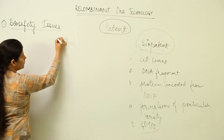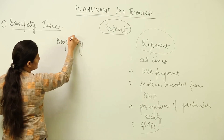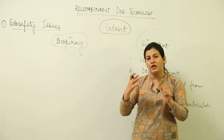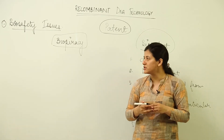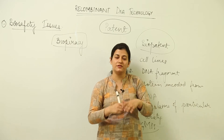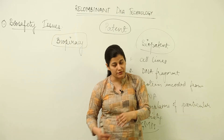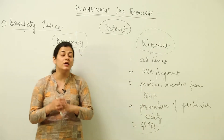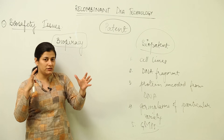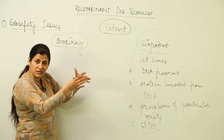Another problem is biopiracy. Biotechnology is now reaching the third world, but in third world countries, the term is still restricted to a few colleges. The material studied there comes from what was studied many decades earlier in first world countries — developed countries like the USA, Germany, and Japan — which have done a huge amount of work in this field. Due to a knowledge gap and technology gap, third world underdeveloped countries remain quite backward in this field.